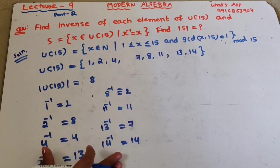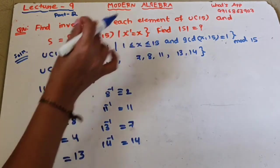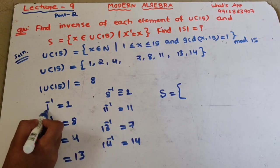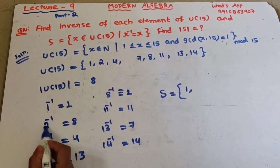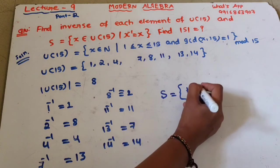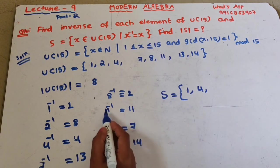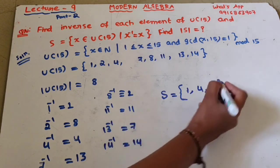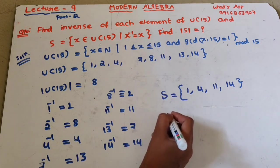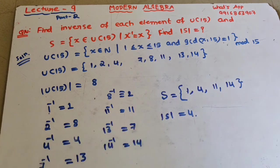Now apply the condition x⁻¹ = x. Checking: 1⁻¹ = 1 ✓, 2⁻¹ = 8 ✗, 4⁻¹ = 4 ✓, 7⁻¹ = 13 ✗, 8⁻¹ = 2 ✗, 11⁻¹ = 11 ✓, 13⁻¹ = 7 ✗, 14⁻¹ = 14 ✓. So S = {1, 4, 11, 14} and the cardinality of S is 4.